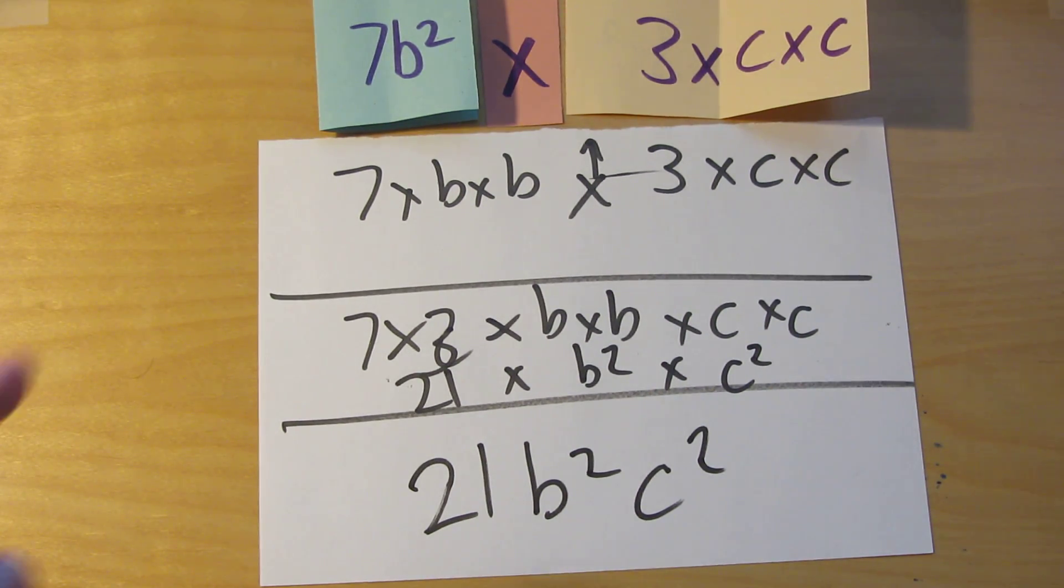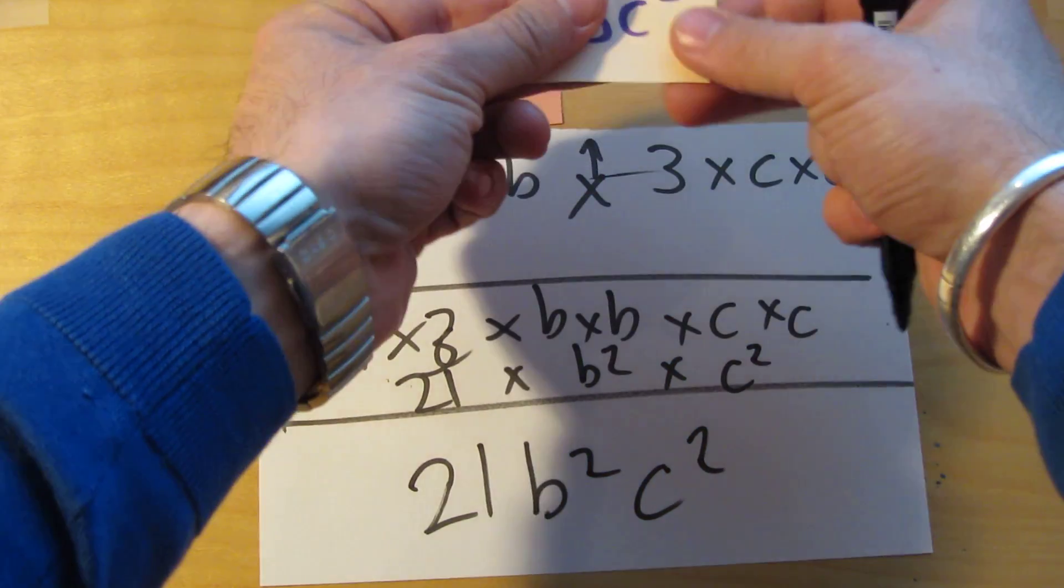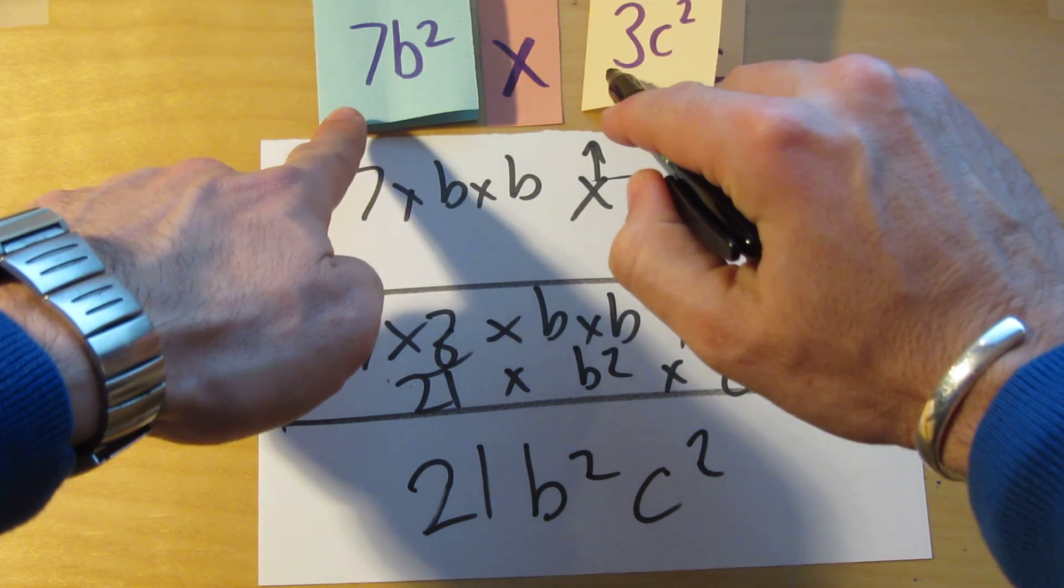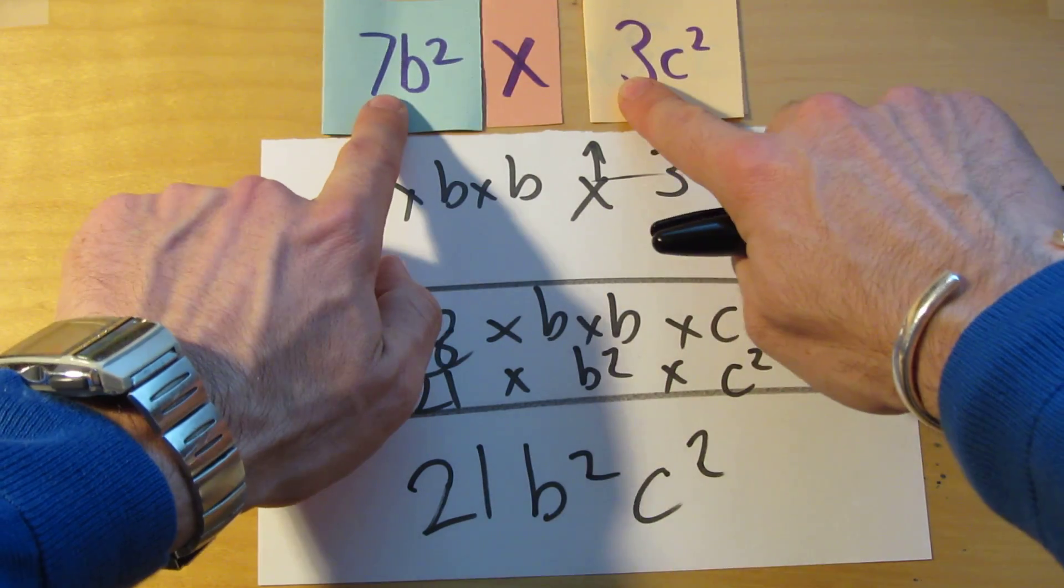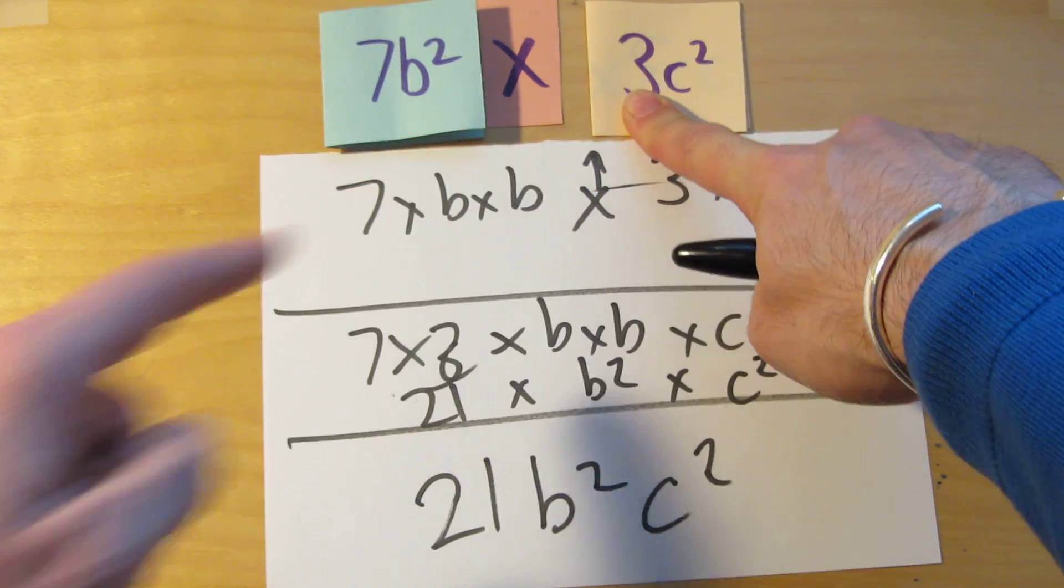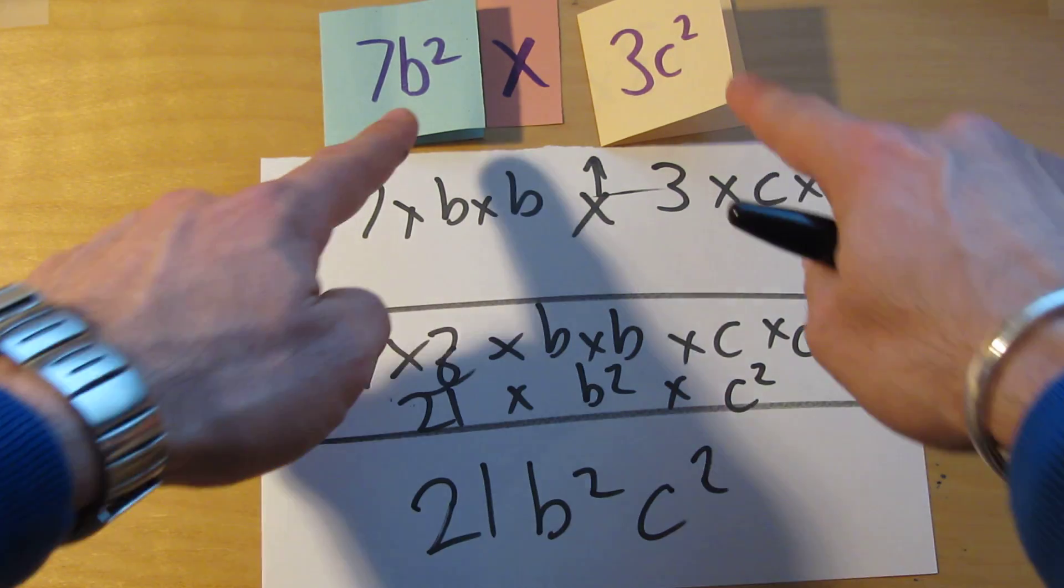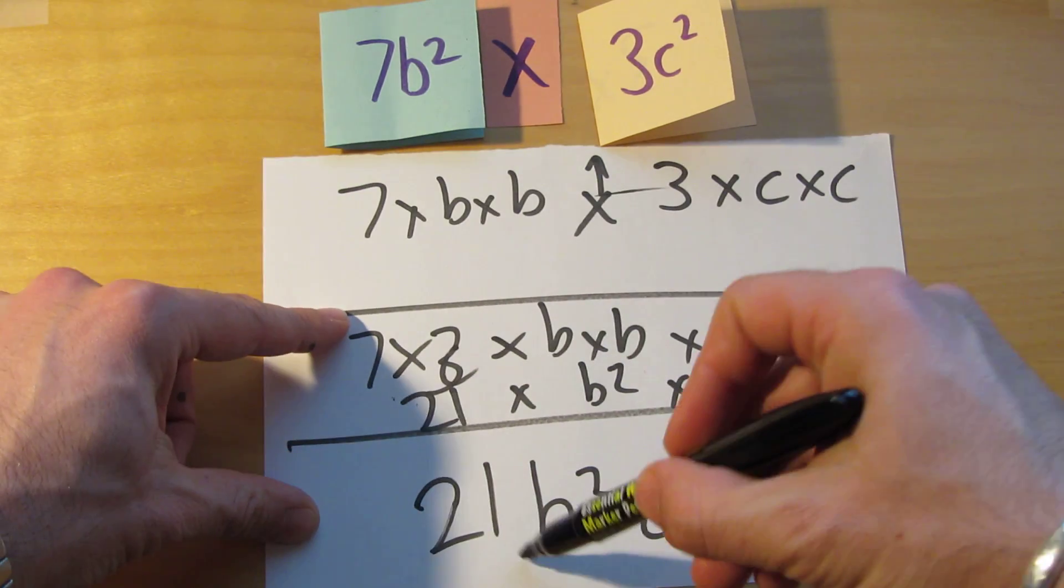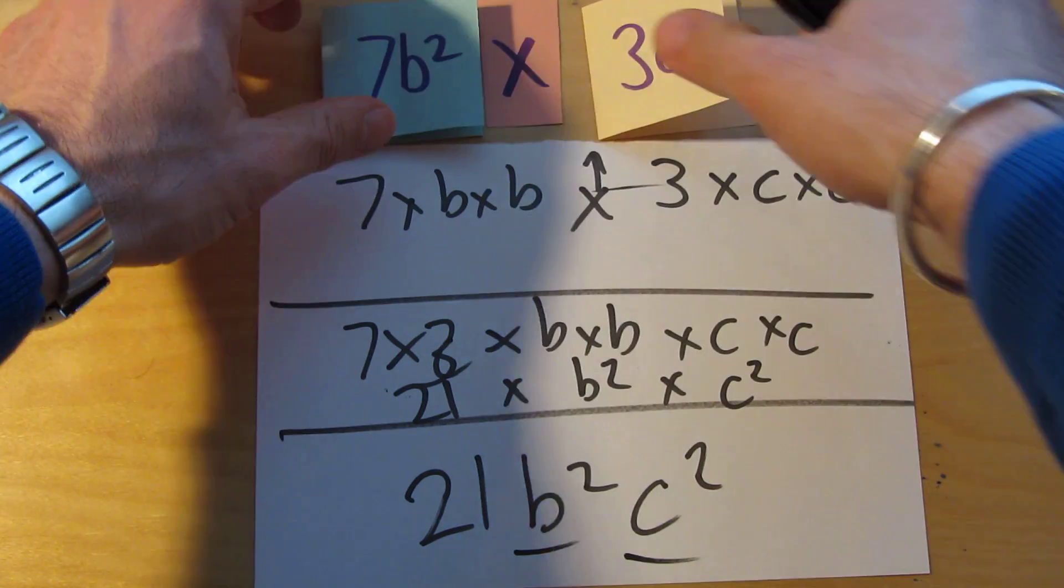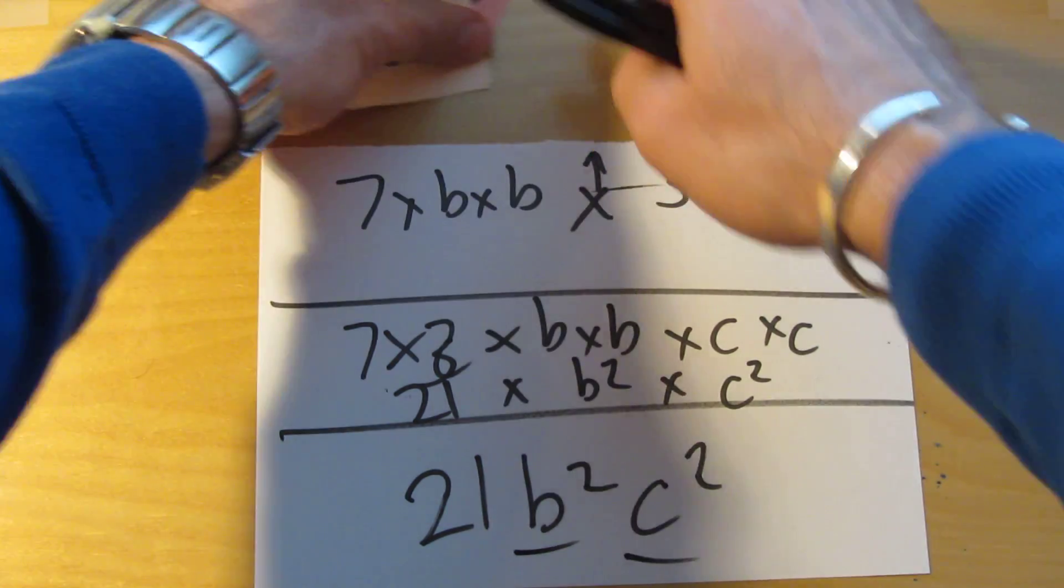All right. So you probably saw that the quick way to do that would have been to times the coefficients together really quickly. And then b squared and c squared. They're two different variables. You can't do anything with the index numbers so you just have to write them as b squared c squared like that without any of the multiplication signs.